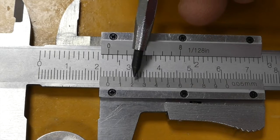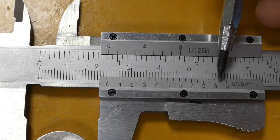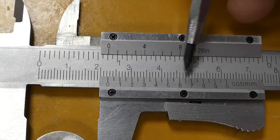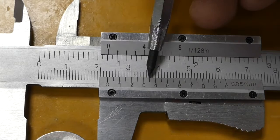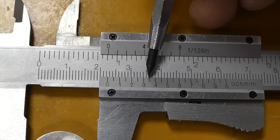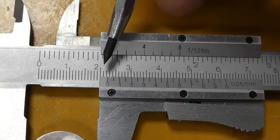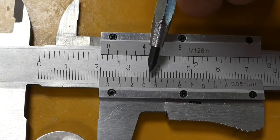Then you look which one of the lines of the vernier scale lines up best with any of the lines on the main scale. In this case it's the line between 3 and 4. That means your measurement in this case is 22.35 millimeters.